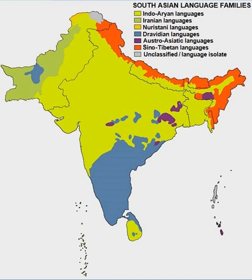The Gupta script was used for writing Sanskrit and is associated with the Gupta Empire of India, a period of material prosperity and great religious and scientific developments. The Gupta script was descended from Brahmi and gave rise to the Siddham script and then the Bengali script.